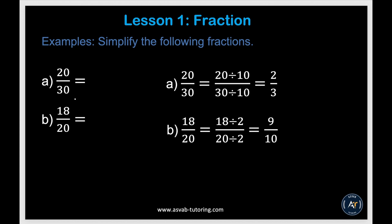The first thing we'll learn is how to simplify fractions. To simplify a fraction, you have to find a number you can divide both the top and bottom by. Here we have 20 over 30 — the number you can divide both 20 and 30 by is 10. So dividing both by 10 gives you 2 over 3. Similarly, 18 over 20 divided by 2 gives you 9 over 10.